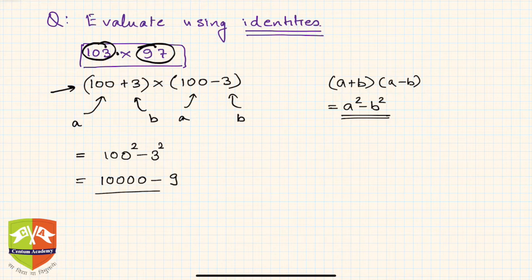Using algebraic identities, we could reduce a very ugly looking multiplication into a very sweet subtraction problem. So you can figure out the answer. It's nothing but 9,991. Very easily done using identities.